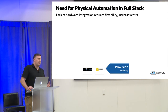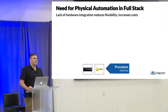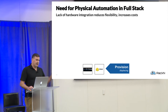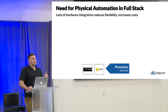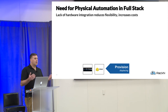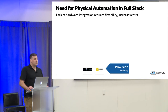When customers ask why they need us, they mention Cobbler, MAAS, Foreman, Satellite, Razor, and many others. We identified a market need. The two primary issues preventing companies from doing repeatable, automatable provisioning were: a strong API, and integration into the infrastructure DNA — what I call the iDNA — that suite of tools, solutions, processes, and procedures unique to every company. A huge challenge is taking something from an external vendor and integrating it into their toolchain.